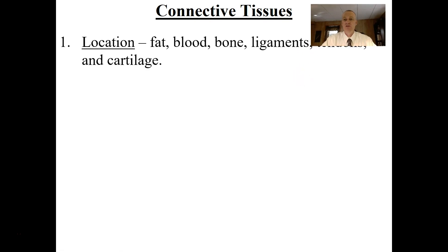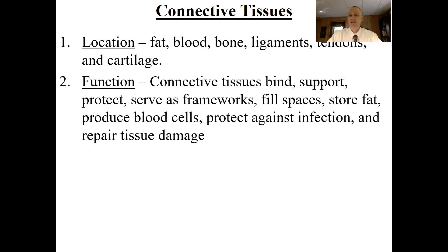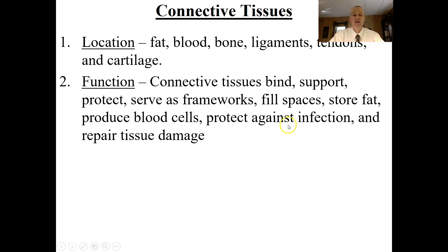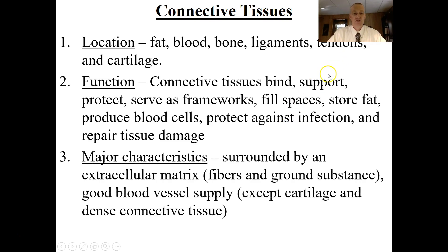Connective tissues are a little different than epithelial tissue. They're located all throughout the body — found in your fat, blood, bone, ligaments, tendons, and cartilage. They function to bind epithelial tissues and bind other tissues. They support, they're protective, they serve as frameworks. For example, your bones are a framework for your body. They fill in spaces — fat does that — it stores lipids, they produce blood cells, they protect against infection, and they can repair tissue damage. So a wide variety of functions these connective tissues serve.